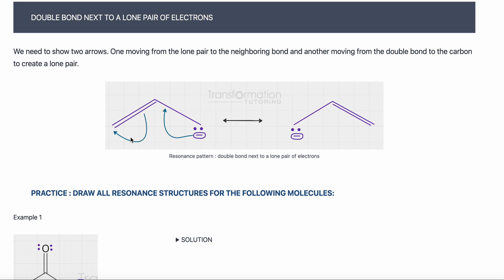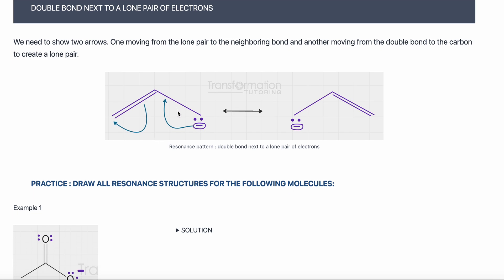The reason we need the second arrow is that if I used only the first arrow, this carbon would have an extended octet. Hydrogen is not shown, but it's there, and I don't want this carbon to have more than eight electrons, so I need to draw both arrows. These two electrons were used to create a double bond. This carbon was negatively charged but it shared its electrons, so now it's neutral.